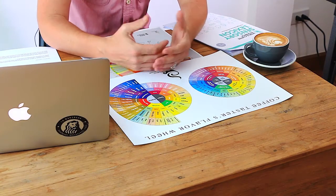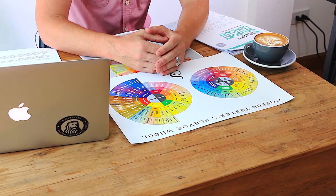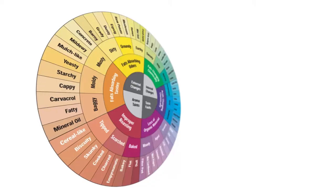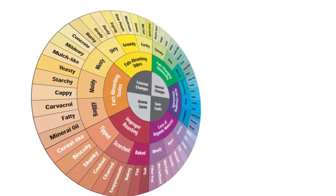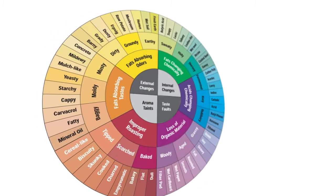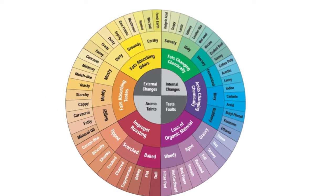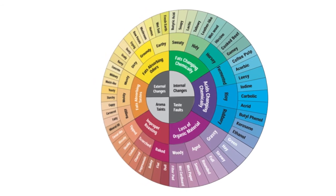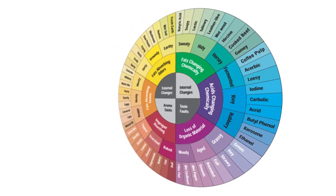This flavor wheel was developed to create a common language so that people could discuss coffee in a way that was mutually understandable. It's organized systematically: on the left side we have defects, and these defects are divided by how they might come about. Starting from internal changes and moving outward, we find that fats change chemically and produce sweaty flavors.